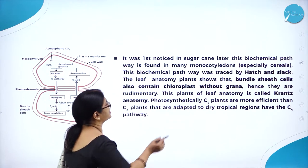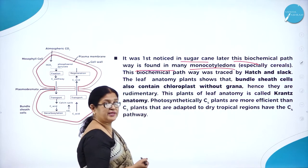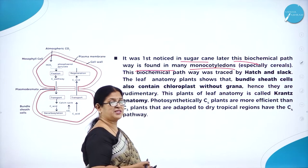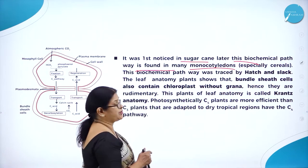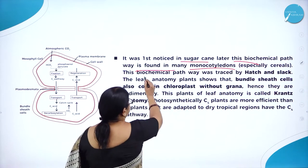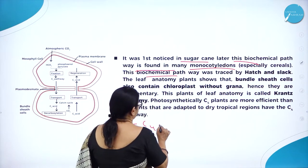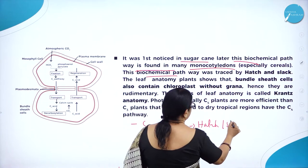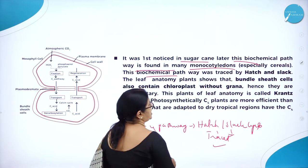It was first noticed in sugarcane. Later this biochemical pathway was found in many monocotyledons, especially cereals — that is the grass family. This biochemical pathway was traced by Hatch and Slack, and hence the name Hatch and Slack cycle. It is also called C4 pathway.